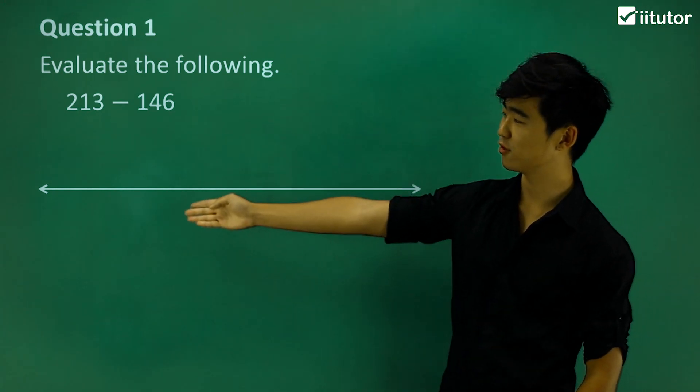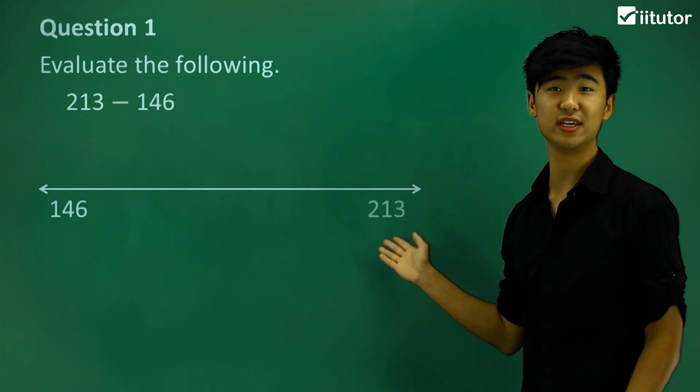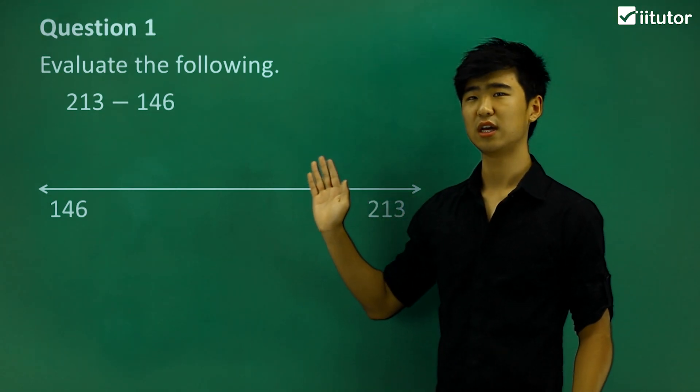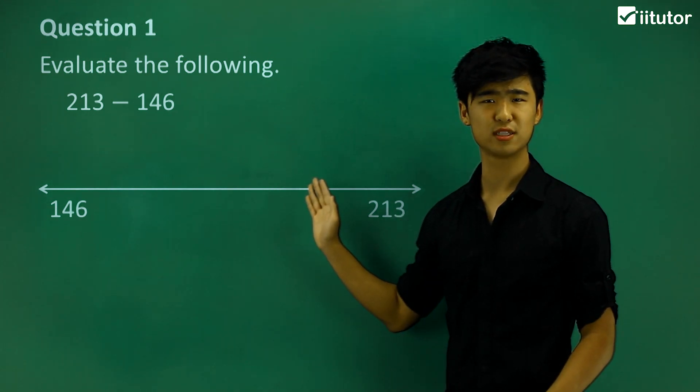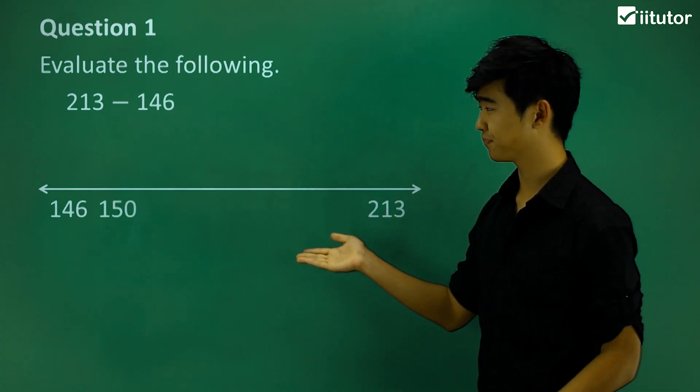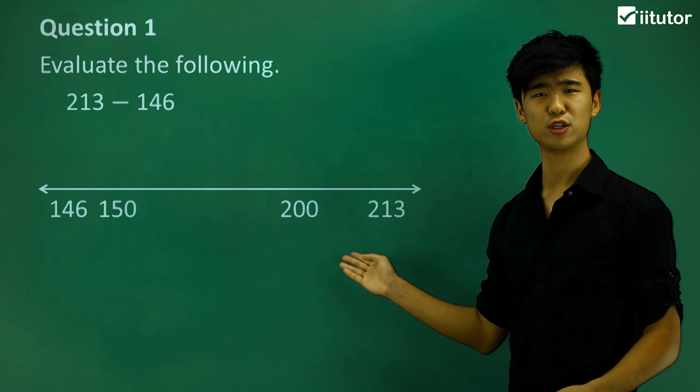Let's write 146 over there and 213 over here. Now what I want to do is plot numbers on this number line that are very easy for us to work with. We can put 150 there and 200 here.